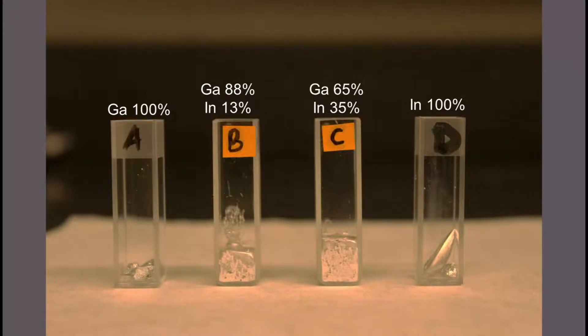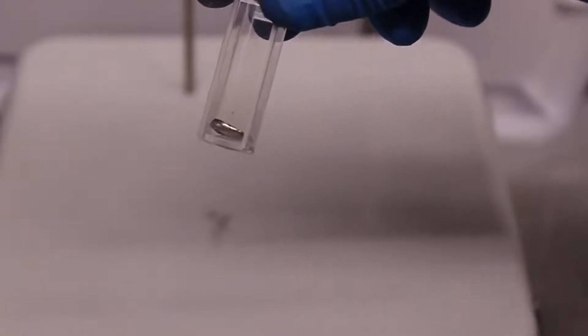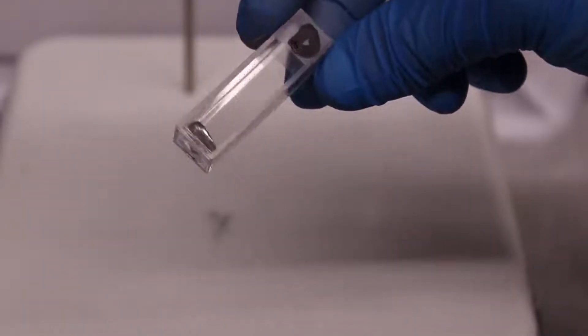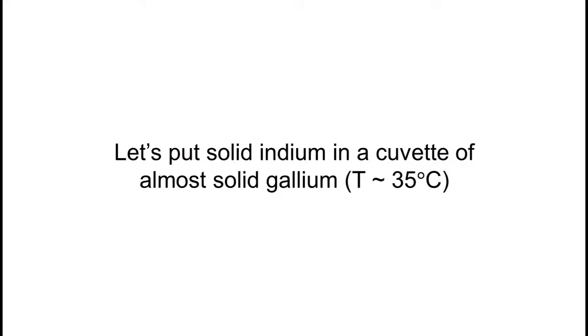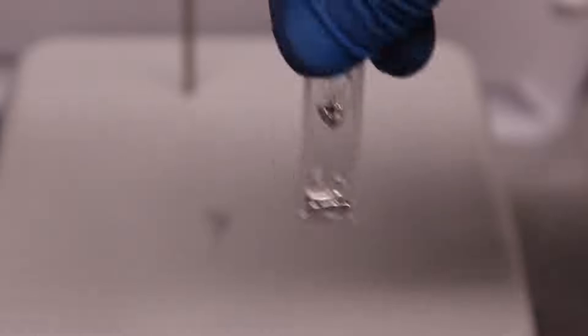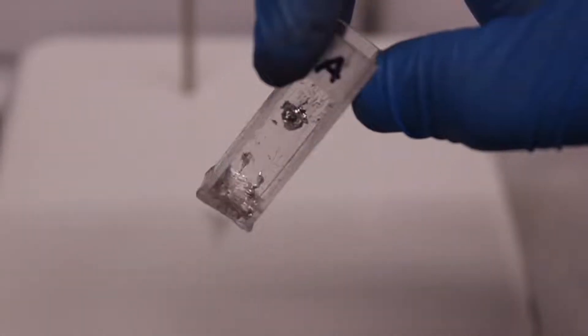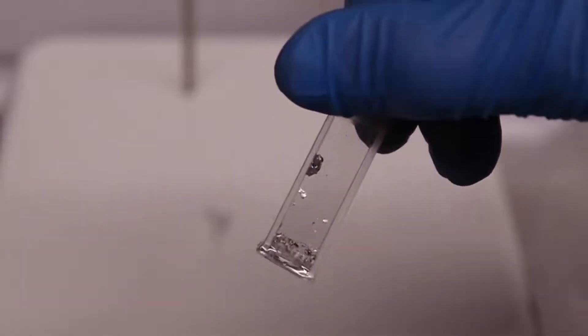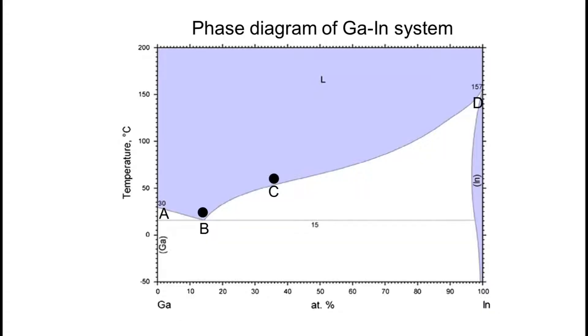In this video we will look at different compositions of gallium and indium and at what temperature they will melt first. We start with solid indium — we put a small piece of solid indium and shake it for one or two minutes, and then it becomes a liquid alloy. Why does this happen?